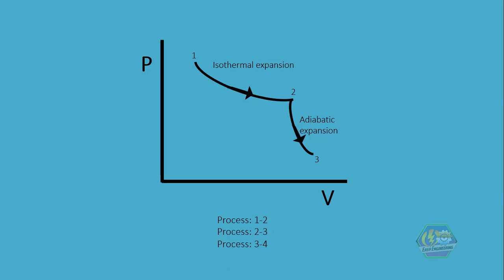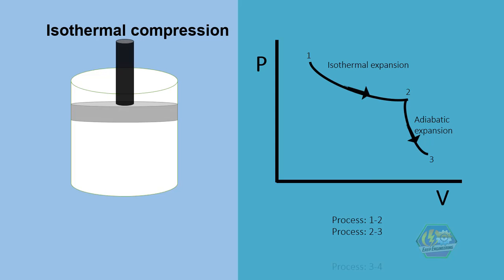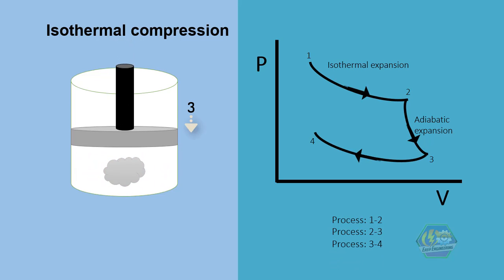Third process is isothermal compression. By compression, it means volume is decreased and as a result pressure increases. On this process, heat energy from the gas is transferred into the heat sink.